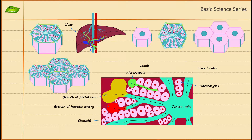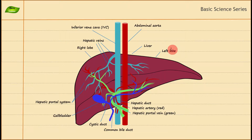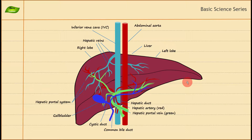I hope this video helps you understand the liver at the cellular level. I encourage you to watch my previous video first, where I discussed the structure and function of the liver. Before starting, I want to briefly discuss the important functions of the liver, which include detoxification and conversion of ammonia to urea.